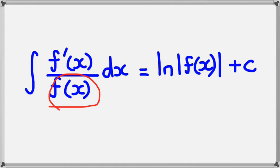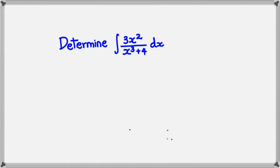It's a bit hard explaining with f dash of x and f of x, so what I'm going to do is show you with an example. Here's an example: we want to determine the integral of 3x squared divided by x cubed plus 4.